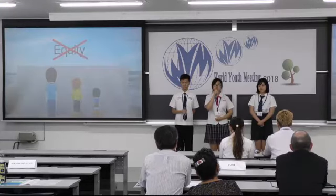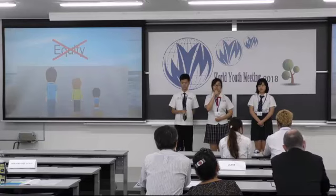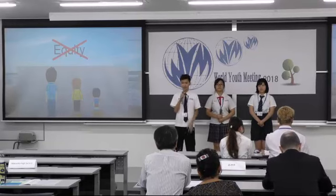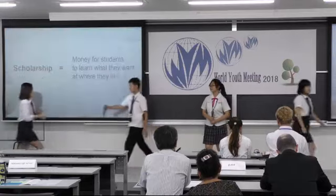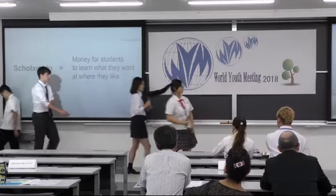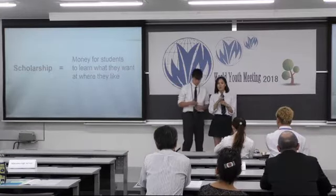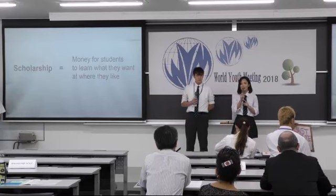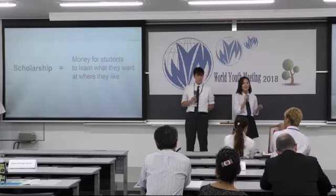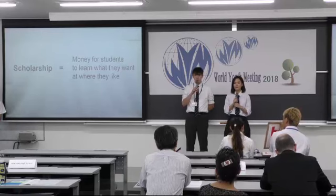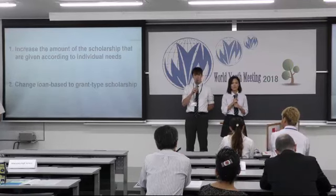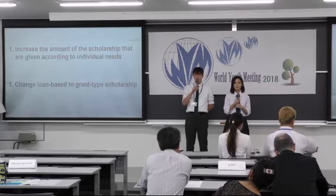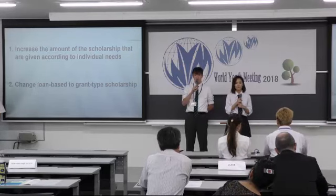The scholarship problem is far from achieving equity, and not everybody is reaching the same goal. So how can we make the system more guided by equity? Scholarship should allow students to learn what they want and where they like. To make scholarships more accessible, not only should the amount be increased, but we need to change loan-based scholarships to grant-type scholarships according to students' individual needs.